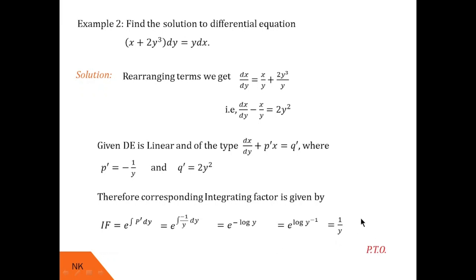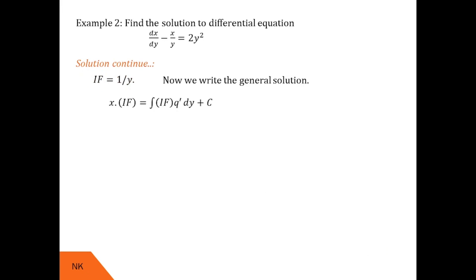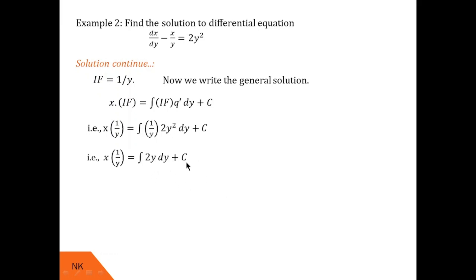We substitute this integrating factor into the solution formula: x × (integrating factor) = ∫(integrating factor × q') dy + c. Substituting, we get x × (1/y) = ∫(1/y) × 2y² dy + c. The y terms cancel and we get ∫2y dy + c. Integration of 2y is y². So the solution is x/y = y² + c.